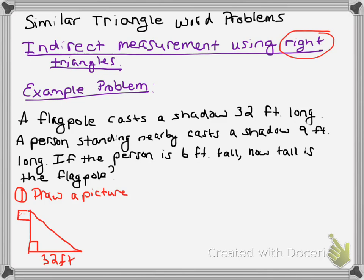Then it says a person standing nearby casts a shadow nine feet long. So I've got a person. I'm going to draw a person. Best thing I can do is draw a stick person. This person is six feet tall. And the shadow is nine feet. So look, we have two triangles and we can use these two right triangles to solve this problem. We need to know how tall the flagpole is. That's our X.